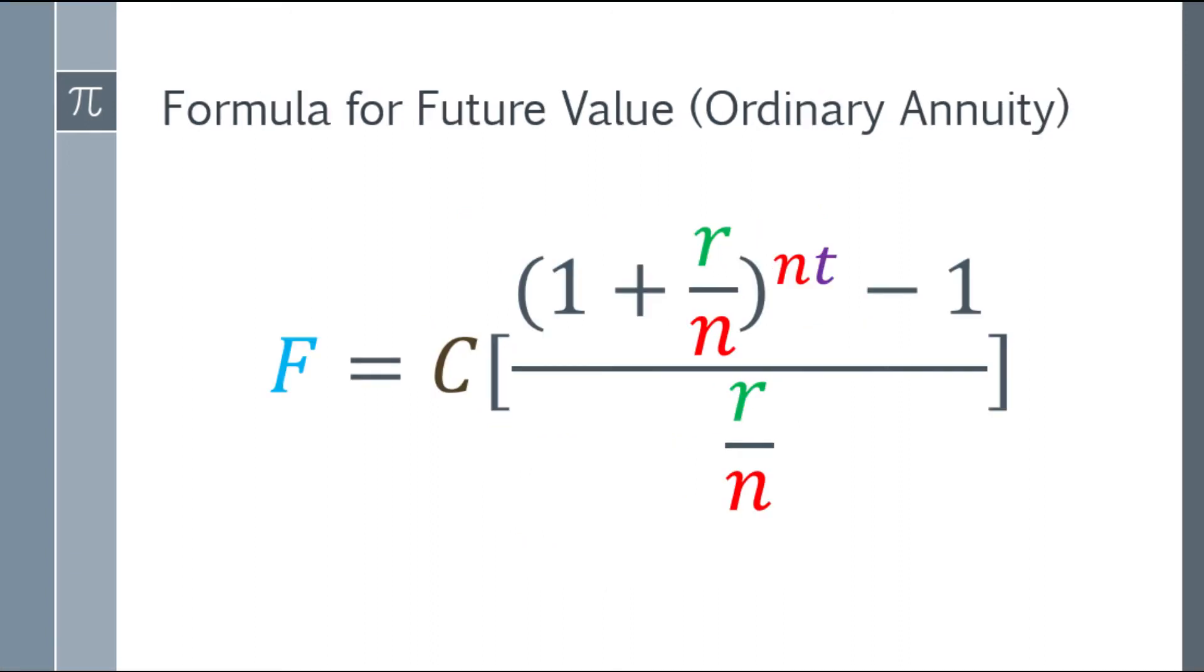Ito yung formula na gagamitin natin. F is equal to C times the quantity, starting with the numerator in parenthesis: 1 plus r over n with an exponent of n times t, minus 1. The denominator is r over n.